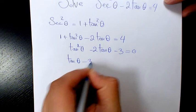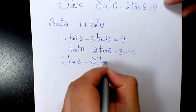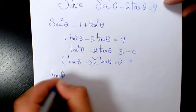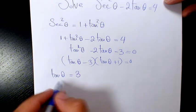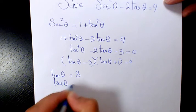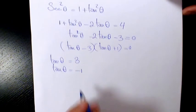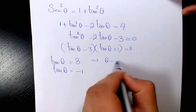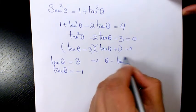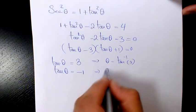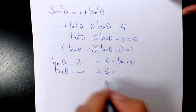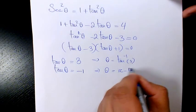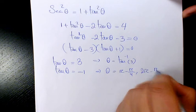It means that tanθ either equals to 3 or tanθ equals to negative 1. So here we have θ to be tan⁻¹(3), and here we have θ = π - π/4 and 2π - π/4.